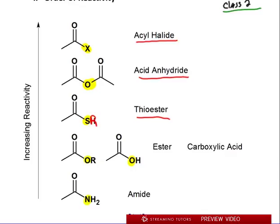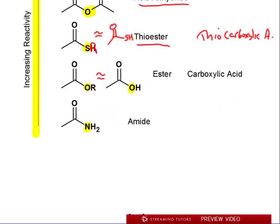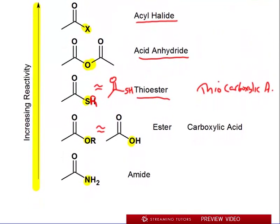Thioesters are the ones we care most about in this section. Moving down the reactivity ladder, the ester and the carboxylic acid are equal in reactivity to each other, just as the thioester is equal to the thio carboxylic acid. Finally, the amide is the least reactive of all these compounds. You need to know this trend — reactivity increases going up, while stability increases going down, so the amide is the most stable and least reactive.